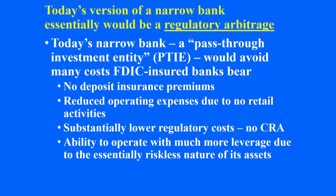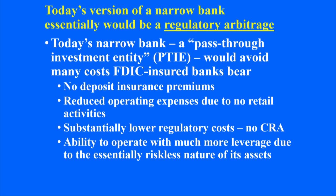The narrow bank concept — now called the pass-through investment entity or PTI — would avoid many of these costs. This is why I characterize this concept as nothing more than a simple regulatory arbitrage. The PTIs will be able to avoid a lot of costs that regular commercial banks have: they don't have to pay deposit insurance premiums because under their charter with the state of Connecticut they would hold deposits that wouldn't need to be FDIC insured. They'd be essentially wholesale institutions with very few employees, lower operating expenses, lower regulatory costs, presumably not subject to the Community Reinvestment Act, and able to operate with much higher leverage due to the riskless nature of their assets.